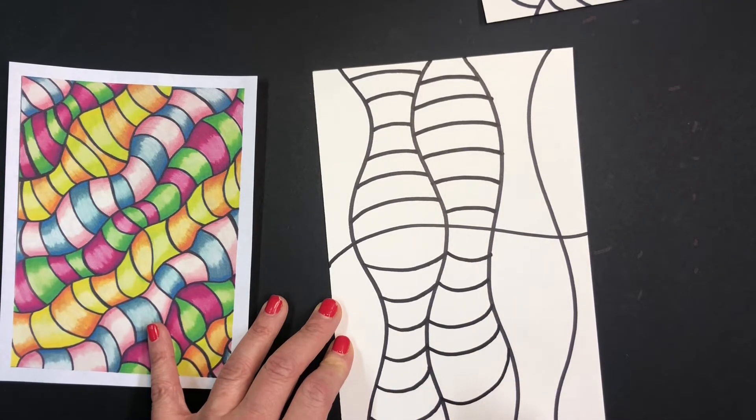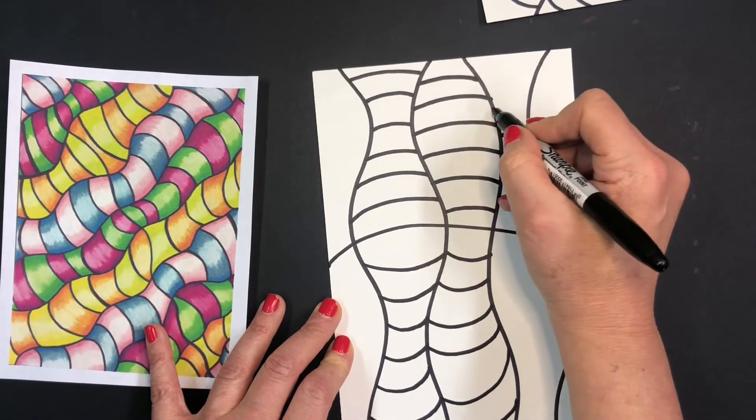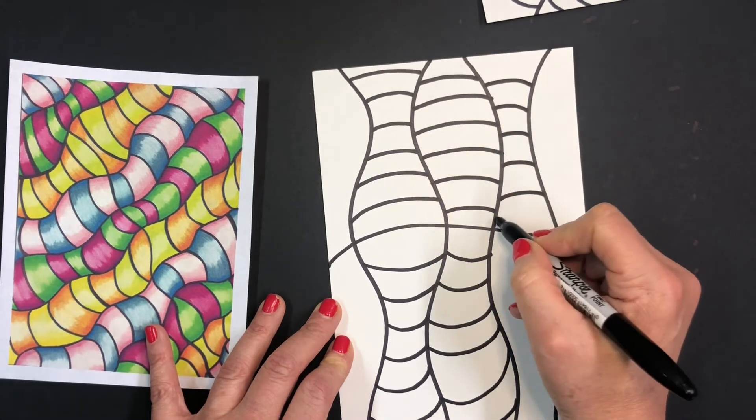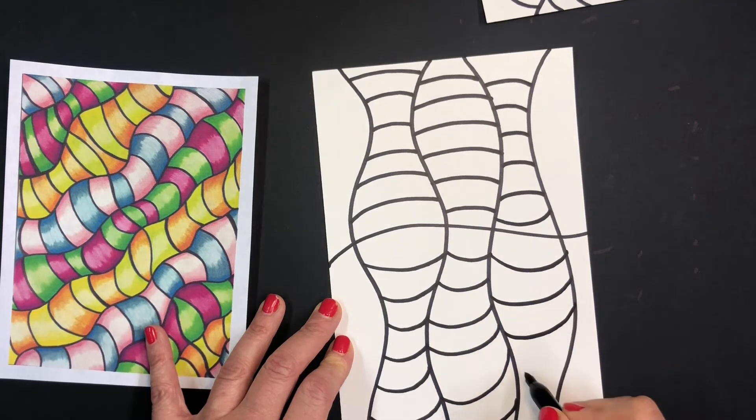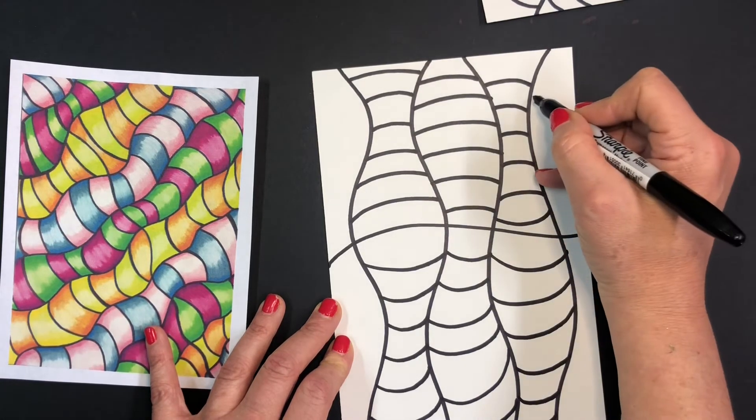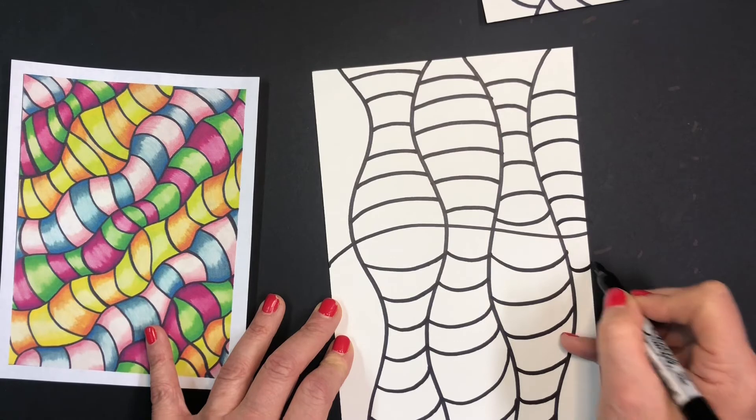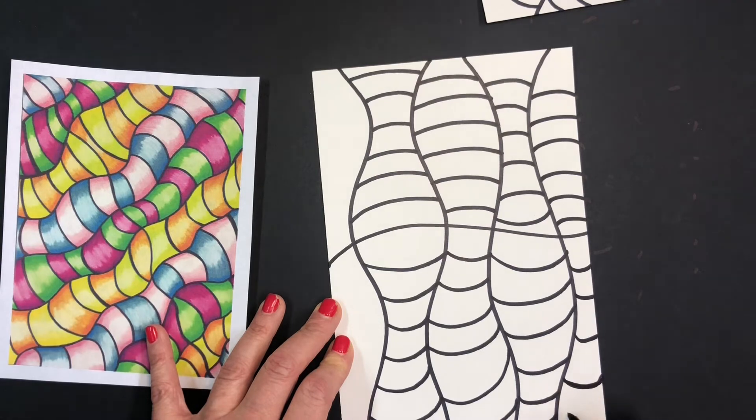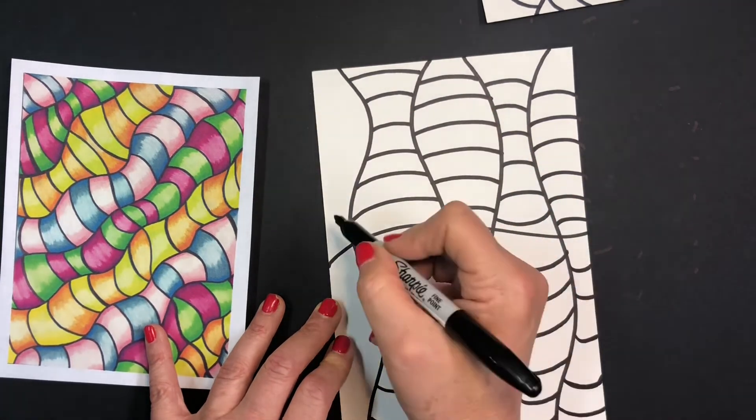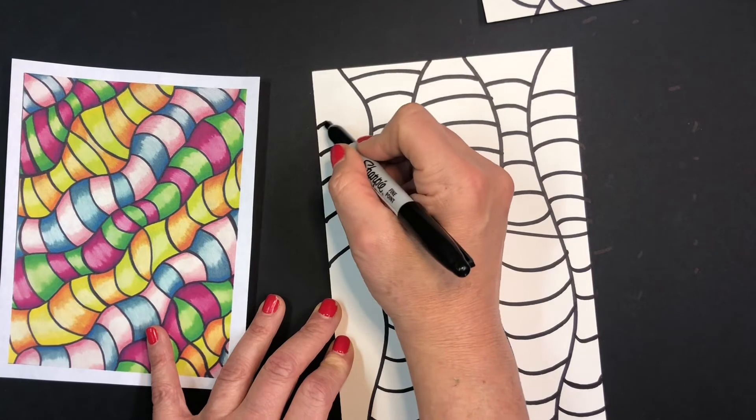And again, these lines don't have to match up. I just happen to be doing it that way. But once you add the value with a colored pencil, it really starts to come to life in a more three-dimensional way.